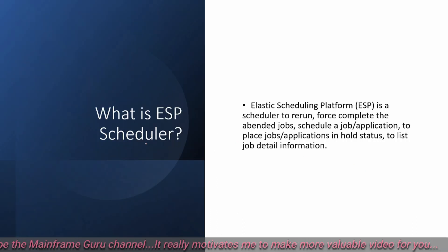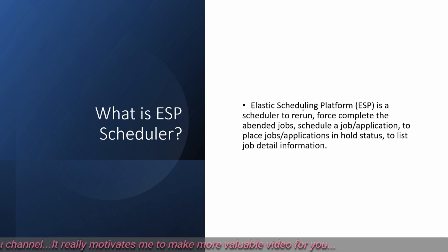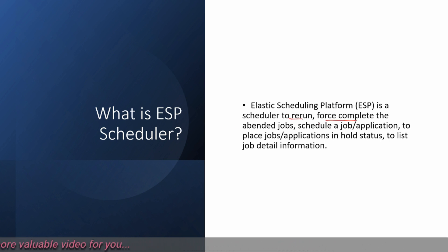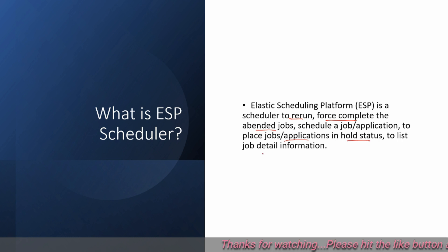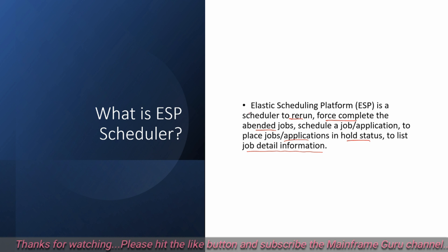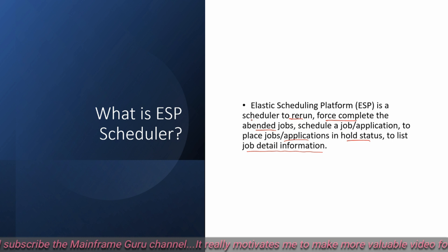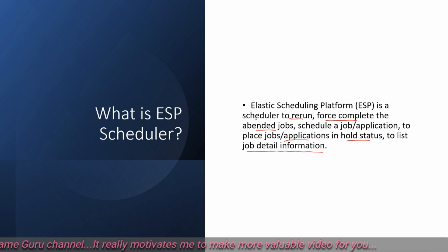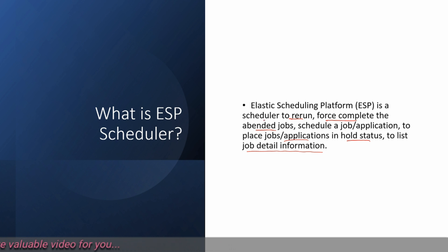What is the ESP scheduler? ESP — Elastic Scheduling Platform — is a scheduler used to read and force-complete abandoned jobs, schedule a job or application, place jobs in hold status, and list job detail information. It is a kind of TWS scheduler — used to schedule, end, and load jobs and applications.